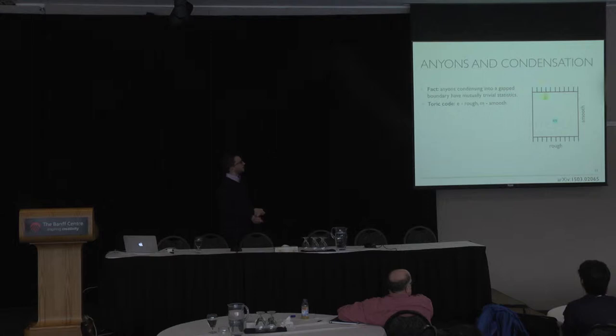So what it means for the toric code is that if we have an electric excitation which condenses on the rough edge, then the magnetic excitation cannot condense there because the braiding of E and M results with minus one phase. But magnetic excitation can condense on the smooth edge.